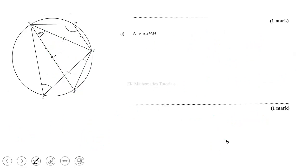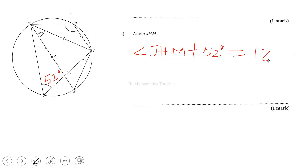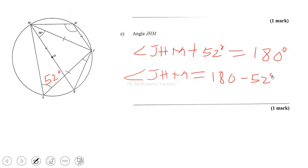Now we have to determine the value of angle JHM. Angle MLJ was found to be 52 degrees, and angle JHM plus angle MLJ equals 180 degrees. The reason is that these are opposite angles of a cyclic quadrilateral. So angle JHM equals 180 minus 52, which gives 128 degrees.